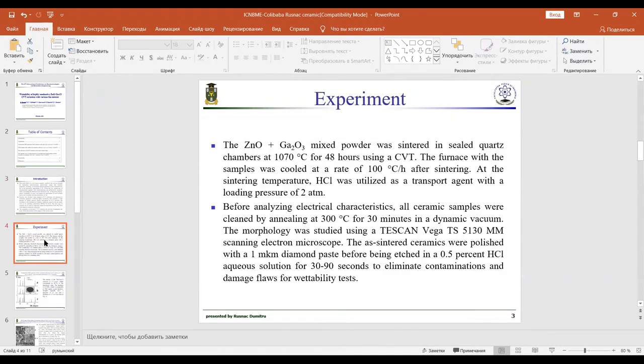Experiment: The zinc oxide and gallium oxide mixed powder was sintered in sealed quartz chambers at 1070 degrees Celsius for 48 hours using CVT. The furnace with the samples was cooled at a rate of 100 degrees Celsius per hour after sintering.